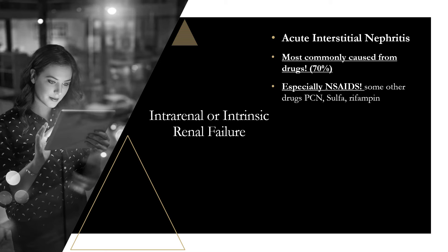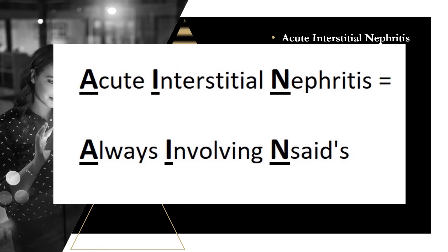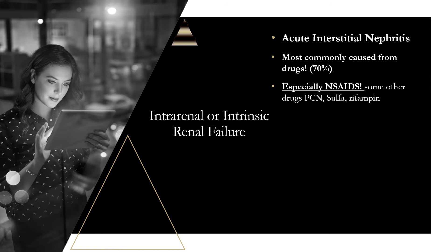A helpful mnemonic: AIN — Acute Interstitial Nephritis — Always Involving NSAIDs. This makes it easy to remember. Rarer causes include infections and autoimmune processes, but those are unlikely on exams. Focus on drugs, especially NSAIDs.